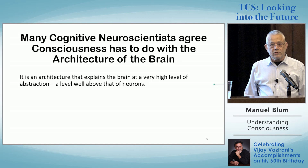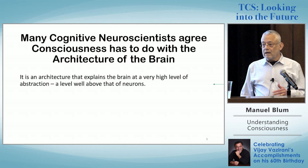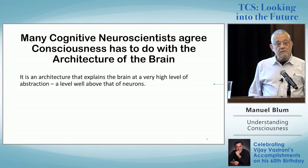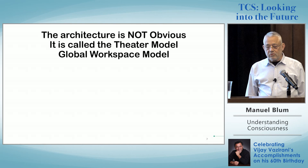It's an architecture that explains the brain at a very high level of abstraction, a level well above that of neurons. I'm not going to bring in neurons at all — it's a higher level. The model is coming from cognitive neuroscientists, and there is agreement on this. The architecture is not obvious. It's got a name: it's called the Global Workspace Model or the Theater Model.